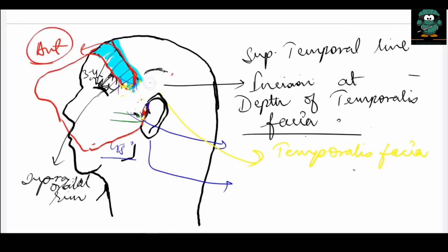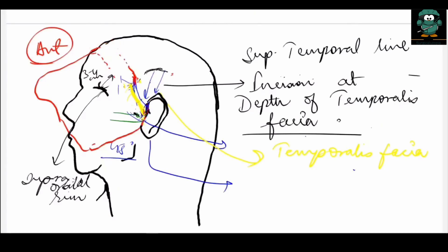This entire flap can now be dissected anteriorly. As the temporalis fascia is dissected anteriorly, the zygomatic arch and zygomatic bone can be palpated, and inferior dissection can be done safely on the lateral aspect. This is because the temporal branch of the facial nerve is elevated along with the temporalis fascia and dissected anteriorly with the flap, making inferior dissection safe.